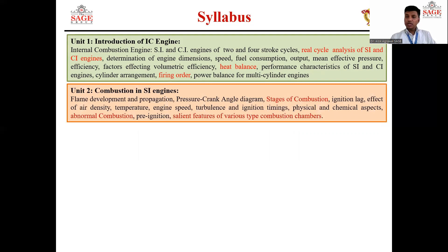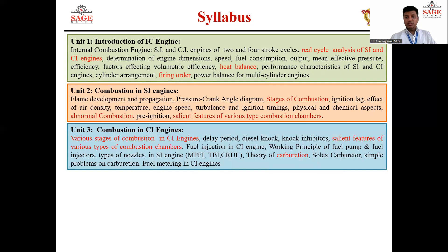In the second unit, it will be about the combustion of SI engine. Here we will study the stages of combustion, what is abnormal combustion also known as detonation, and the salient features of various types of combustion chambers. Third unit will be about combustion of CI engine. In this unit, we will study the various stages of CI engine, that is compression ignition engine, and the various types of combustion chambers used in CI engine.